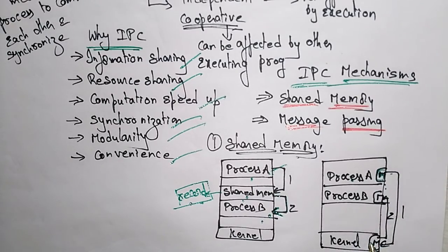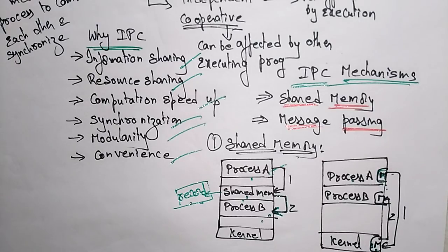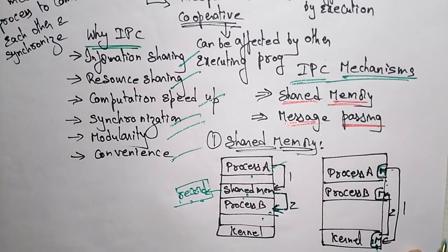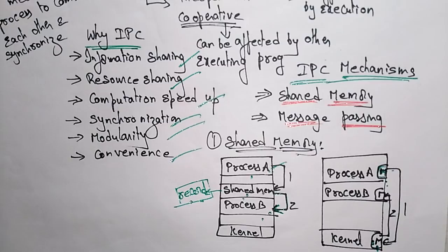The kernel checks whether any other device is using the resources; if so, another resource is taken. A process can use shared memory both for extracting information as a record from other processes, and for delivering specific information to other processes.